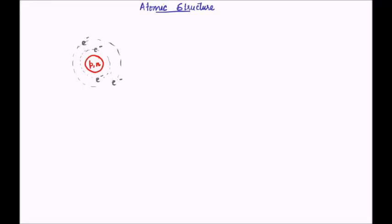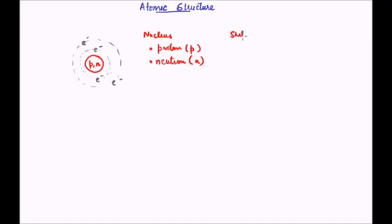Let me write down the convention. An atom has a nucleus which has protons, denoted by P, and neutrons, denoted by N. Beyond the nucleus we have the shells which have electrons. The shells are marked from their proximity to the nucleus.